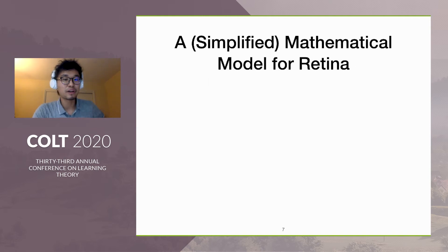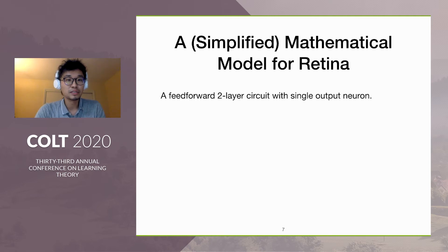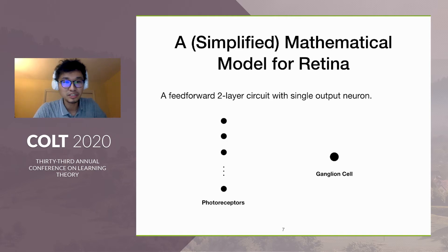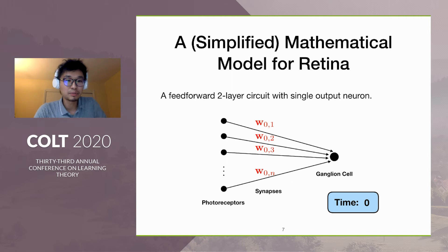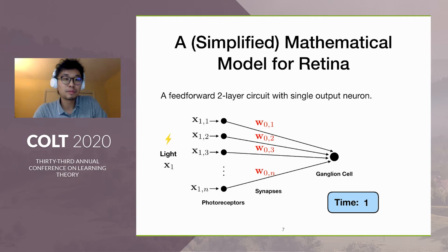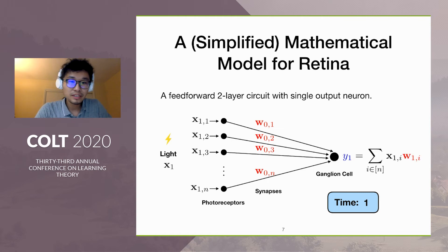Next, let us move on to identify the right mathematical model to enable theoretical analysis. Recall that retina can be simplified as a feed-forward two-layer circuit, where the input layer are photoreceptors and the output layer are ganglion cells. For simplicity, let's focus on a single ganglion cell. We know that the synapse encodes the receptive field information, and here we use an n-dimensional real vector to denote that, where n is the number of photoreceptors. The input light can also be modeled as an n-dimensional vector, which serves as the input to the streaming PCA problem. We consider the ganglion cell as a linear neuron, where the potential is the inner product between input x and the synapse weight w.